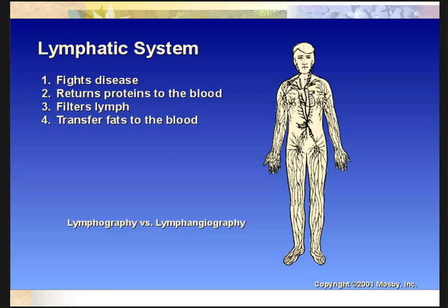The lymphatic system fights disease, returns proteins back to the blood — the lymphatic fluid is proteinaceous — and filters lymph. Filtration takes place in the lymph nodes, which makes sense since this lymph is going to be fed back into central circulation, so you want it cleaned up as much as possible. The lymphatic system can also help transfer fats and cholesterol back into the bloodstream.